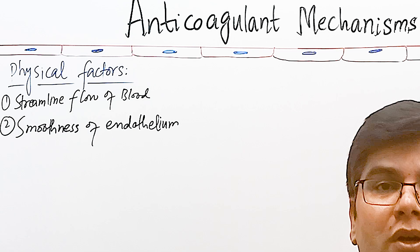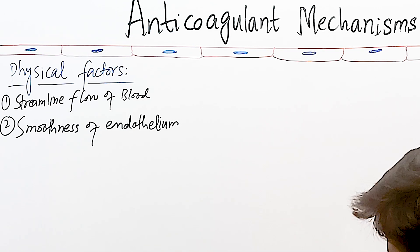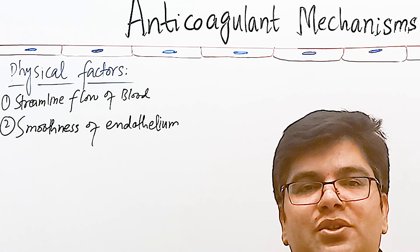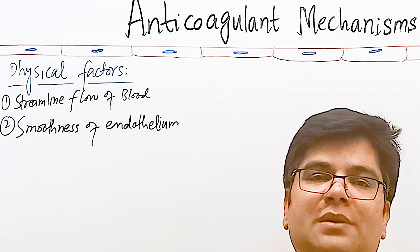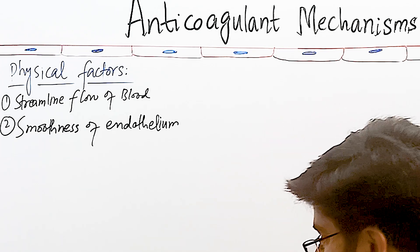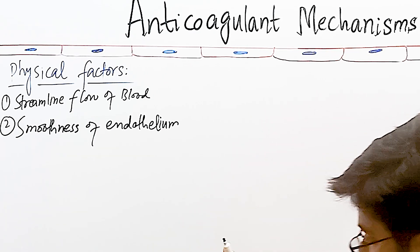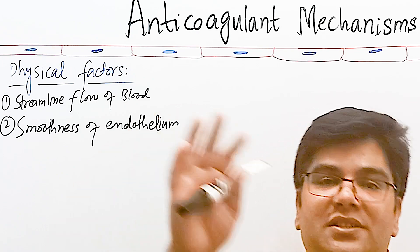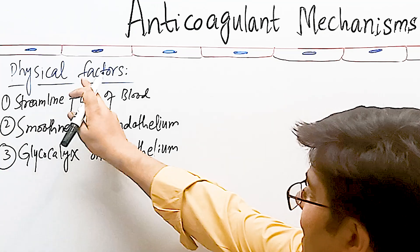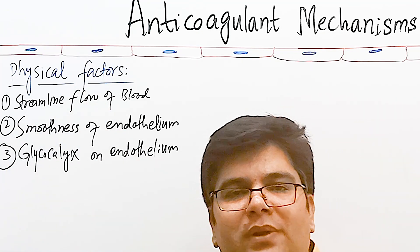The second physical factor is smoothness of the endothelial surface. These endothelial cells are normally smooth and undamaged, so there are fewer chances for clotting factor number 12 to come in contact with the normal endothelial lining, and hence the intrinsic pathway is not activated — no cascade reaction, no blood clotting. When there is injury, the surface becomes rough, factor 12 becomes activated, stimulating the intrinsic pathway and causing clotting.